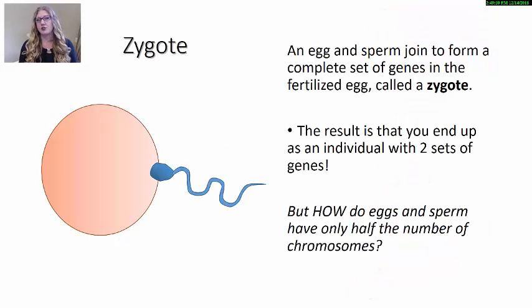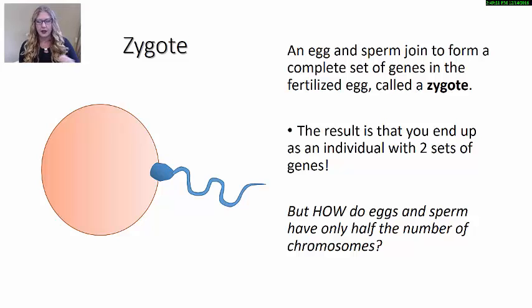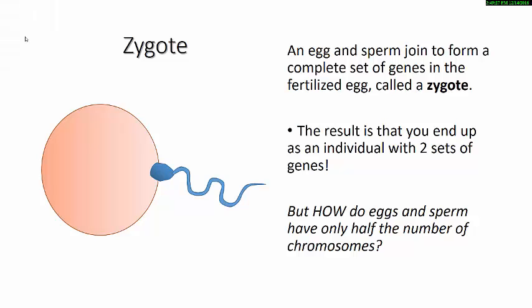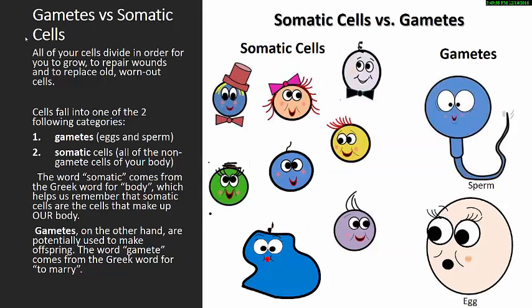When the egg and sperm join together to create the fertilized egg that we call a zygote, the result is that you end up with 46 chromosomes — 23 from each parent. But in order for that to happen, the egg and the sperm have to have only half the number of chromosomes as all of your other cells. Your sex cells have a specific name — we call them gametes. When we say gametes, that means all of your sex cells: the sperm and the eggs.